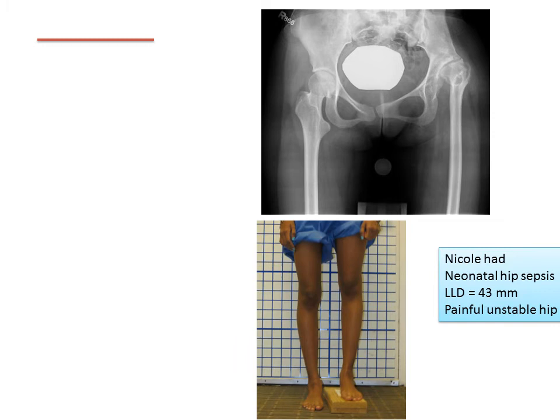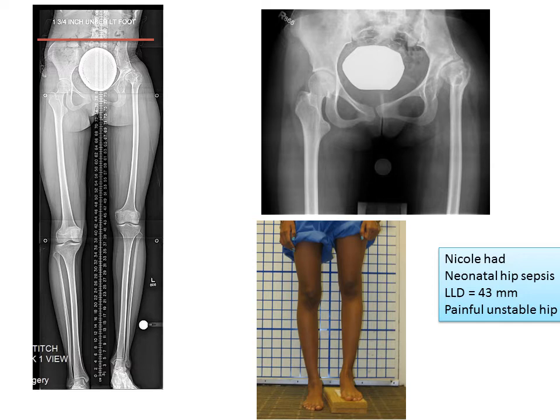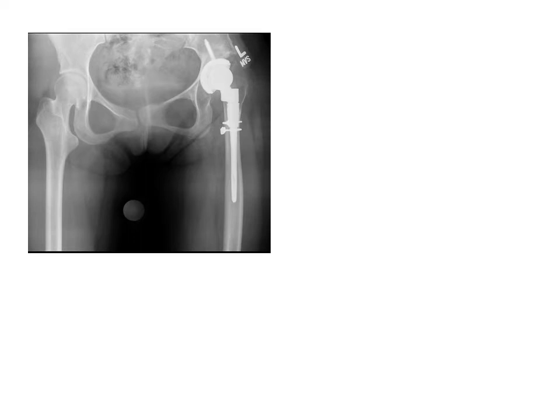I'd like to show you another example that's a little bit different. Nicole had a leg length discrepancy of 43 millimeters with a painful, unstable left hip from neonatal hip sepsis. In this case, there's not much contracture, but part of the shortening is from the proximal migration of the hip, and part of the shortening is from the actual shortening of the leg.